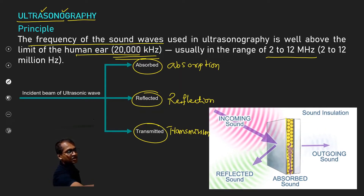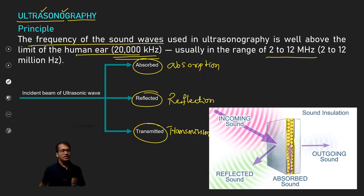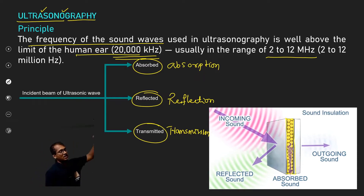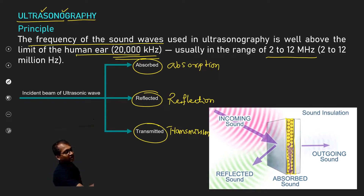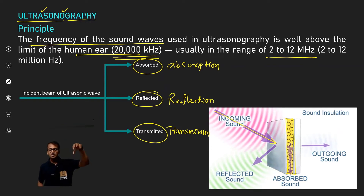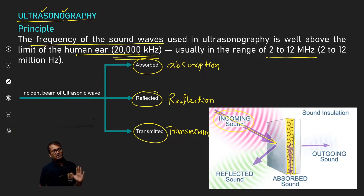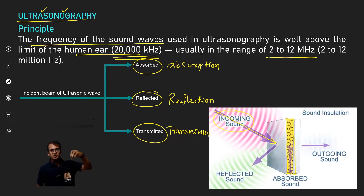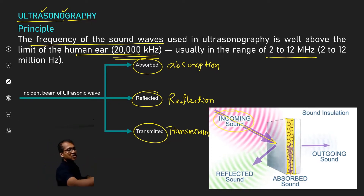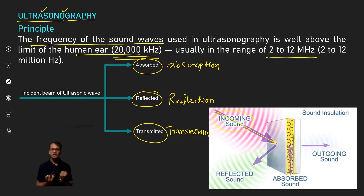Now, consider a tissue — the patient has a tissue. An ultrasonic wave is incident on it. This is the incoming ultrasonic sound wave. When the sound wave hits the tissue, one part of the wave is absorbed into the tissue.